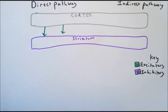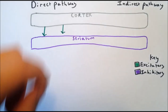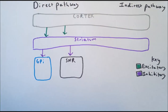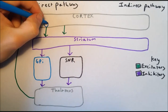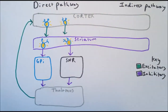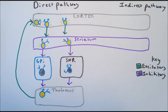The overall effect of the direct pathway is to stimulate the cortex. The cortex provides excitatory input to the striatum, which then provides inhibitory output directly to the internal globus pallidus and the substantia nigra pars reticularis. These then provide inhibitory input to the thalamus, which has excitatory connections back to the cortex. If the direct pathway is stimulated, the striatum is excited, increasing its inhibition of the internal globus pallidus and substantia nigra pars reticularis. As these areas are inhibited, their output is reduced, meaning they are less able to inhibit the thalamus, and the thalamic output reaches the cortex and excites cortical neurons.